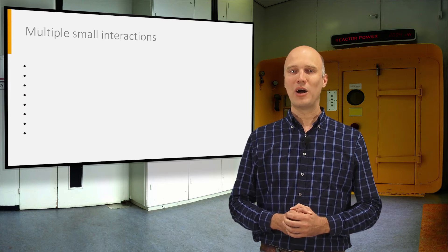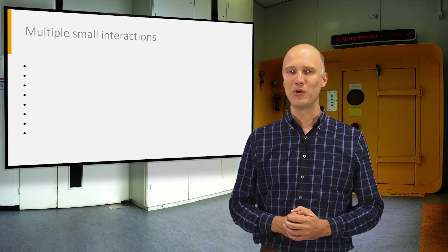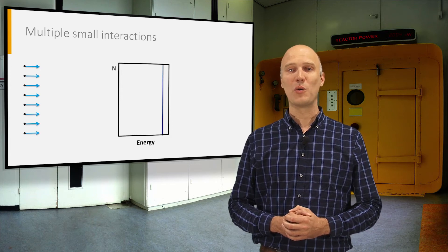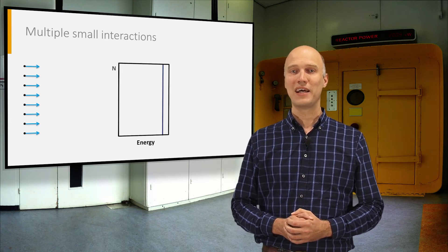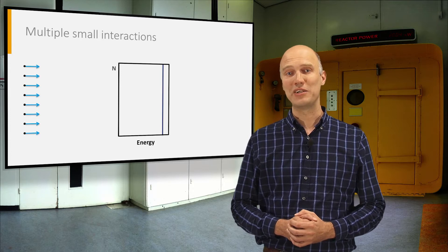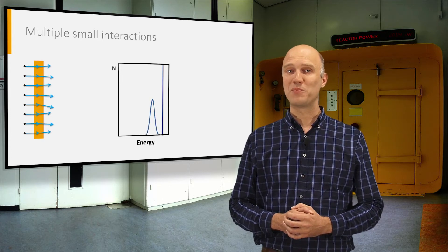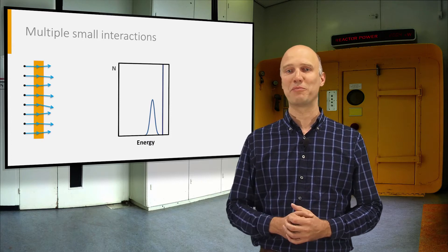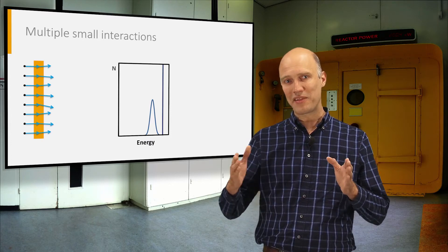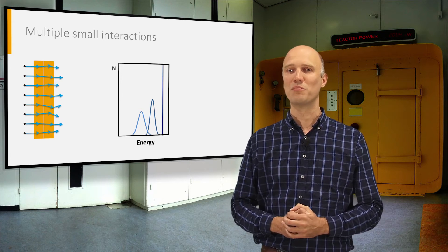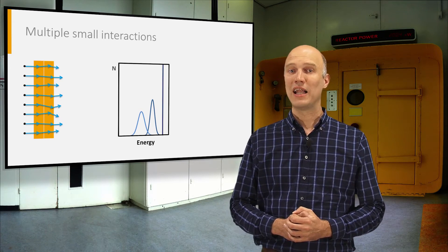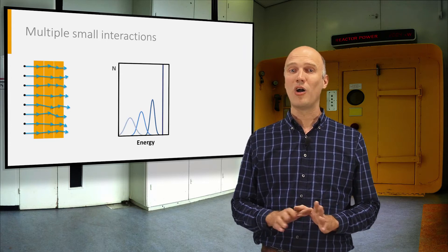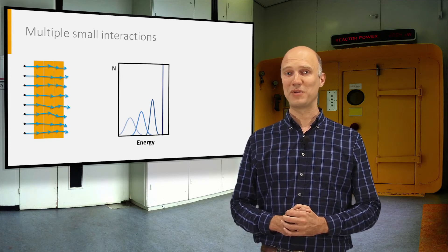Let us consider now a parallel beam of mono-energetic particles. In the case of particles undergoing multiple small interactions, the energy of the particles will be degraded. There will be a spread in the energy of the particles in the beam after passing through the slab of material. By increasing the slab thickness, particles will lose more and more energy. As long as the particles do not lose all of their energy, all particles will pass through the slab of material.